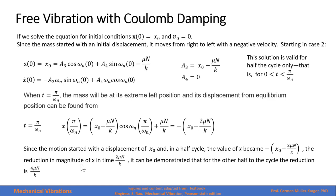The reduction in magnitude of x in that time is 2μN/k. It can be demonstrated that for the other half of the cycle, the reduction is 4μN/k.